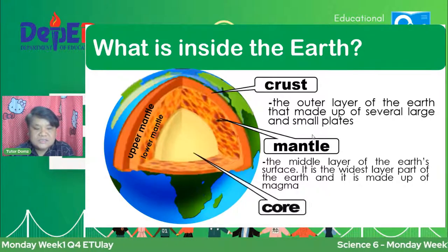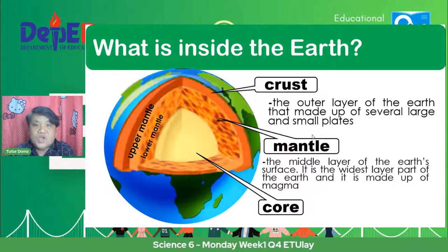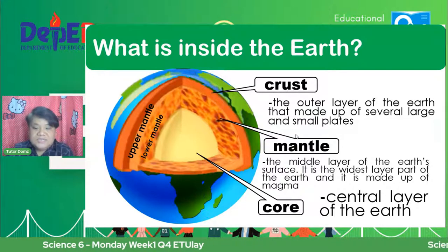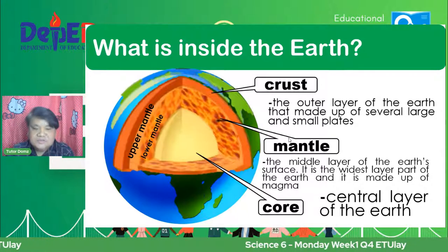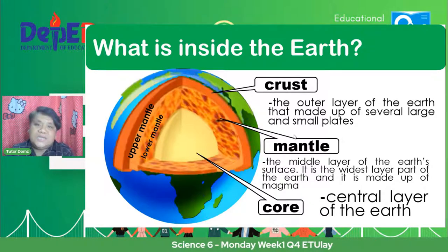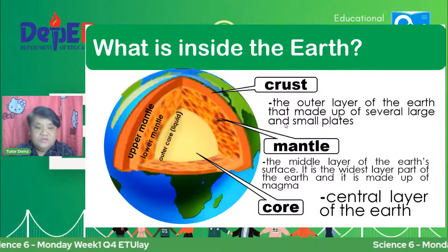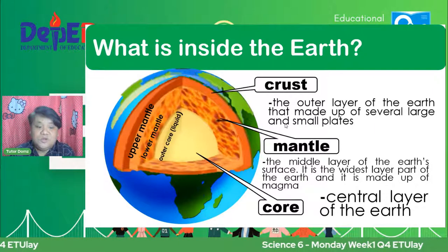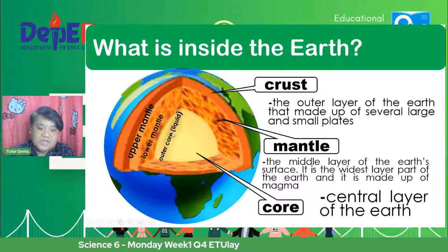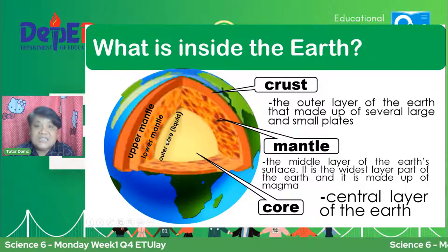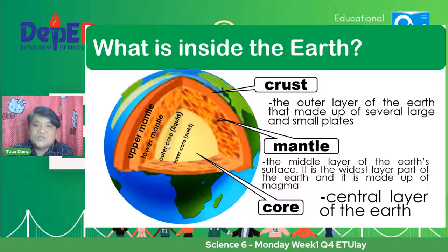Pasok tayo sa pinakakaloob-looban ng mundo — yan yung tinatawag nating core. When we say core, this is the central layer of the Earth, yung pinakabitna niya. Kung ang mantle ay super init, ito mega-mega init na talaga. There are two parts of a core: the liquid part is the outer core, and yung pinakacenter ng Earth is the inner core — ito yung solid part.